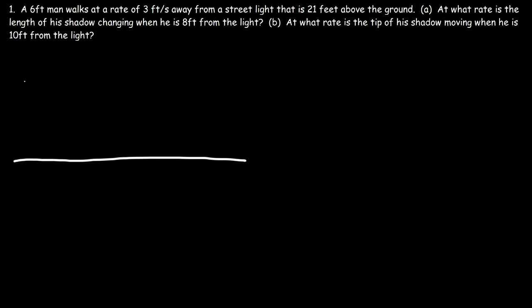So let's say that's the ground, and here is the streetlight. Now let's say this is the person. Now let's draw a line from the streetlight to the person.